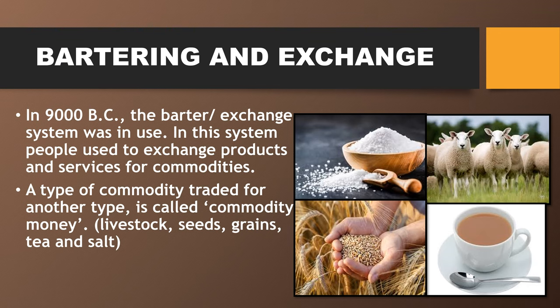Bartering and exchange. Dear students, do you know that earlier, in ancient times, there was a system called bartering? The bartering and exchange system was in practice. In 9000 BC, the barter and exchange system was in use. In this system, people used to exchange products and services for commodities. For example, a farmer having wheat would exchange it for tea, sheep, or salt. This type of commodity traded for another type is called commodity money.